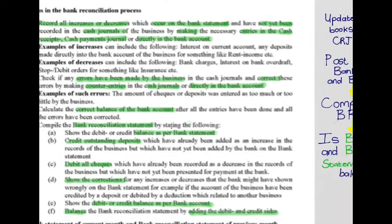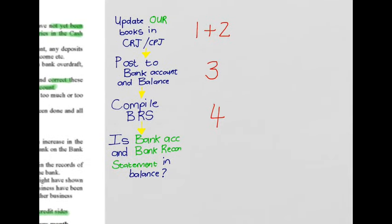In summary, the four steps are: first, update our books using the CRJ and CPJ with outstanding information or errors; second, post these to the bank account and calculate the correct balance; third, take that bank account balance to the bank reconciliation statement; and fourth, compile the rest of the bank reconciliation statement with all outstanding information or errors in the bank's books — that is, on the bank statement. If the bank account and the bank reconciliation statement are in balance, then bank reconciliation is complete. Thank you very much.